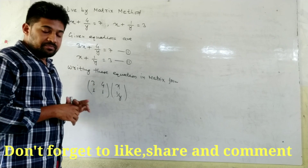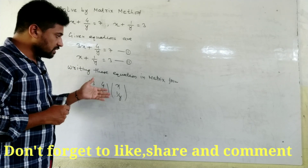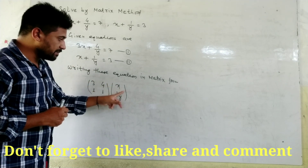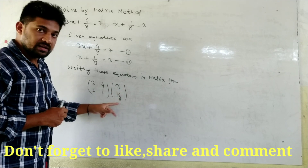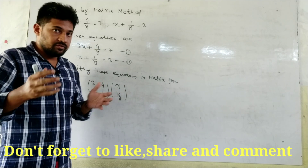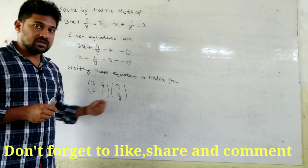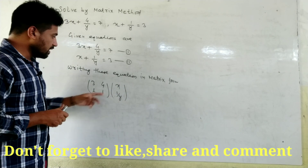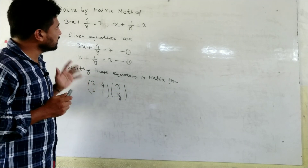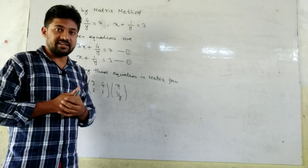I already uploaded a video related to the case where both x and y are in denominator form — 1 over x and 1 over y. If you haven't watched it yet, please go ahead and watch that video. This current problem has 1 in the numerator. I think this is the last video on solving by the matrix method.